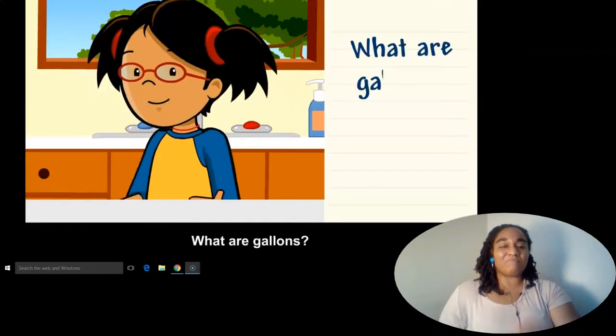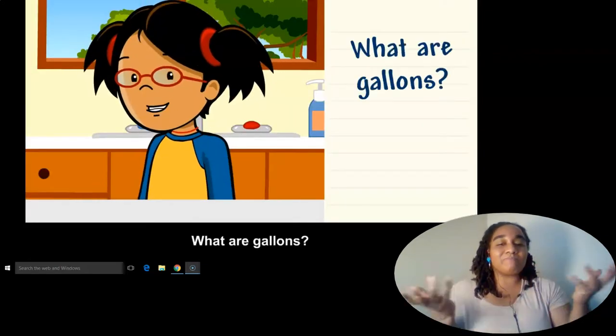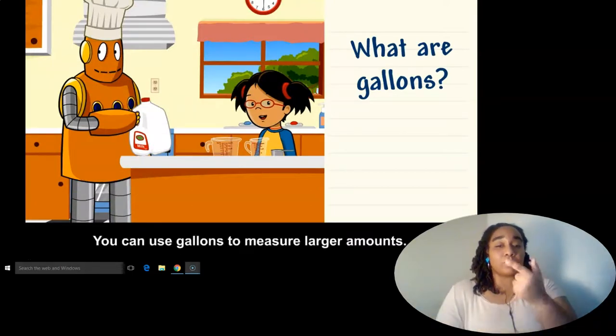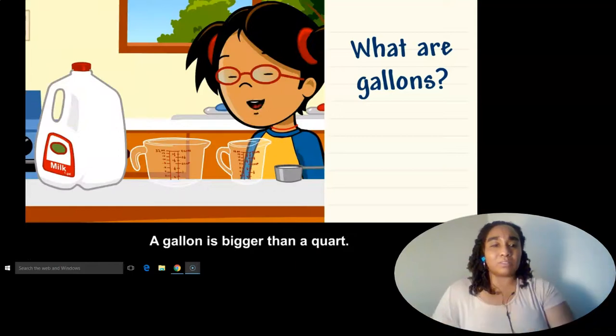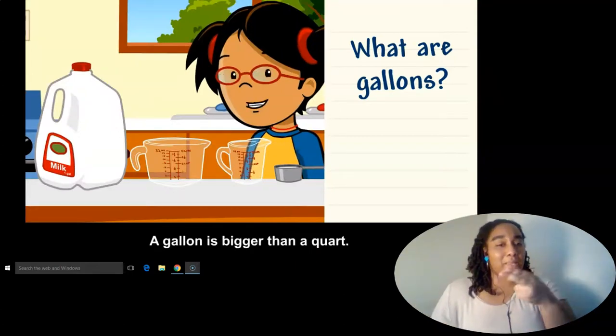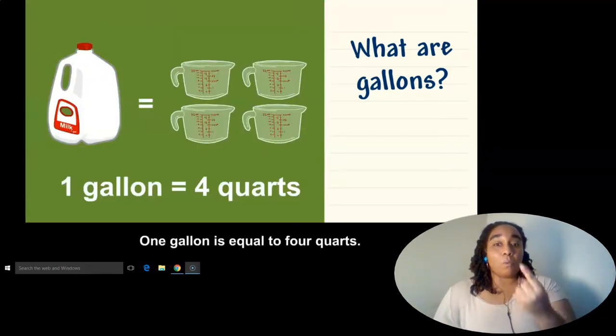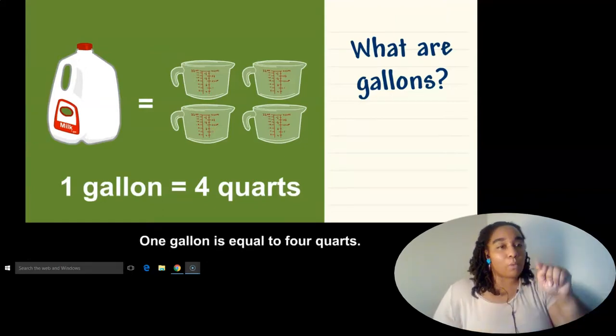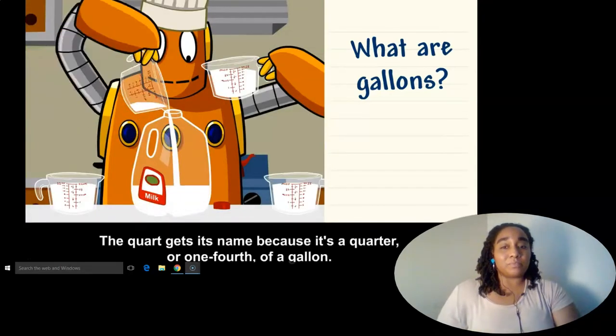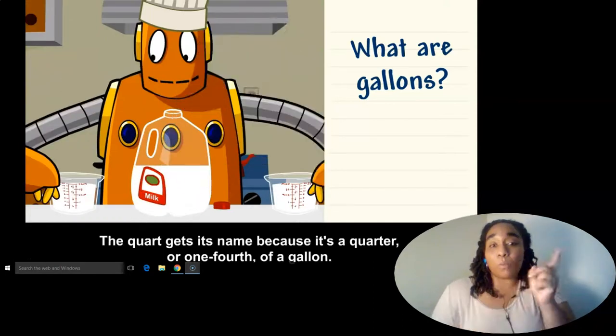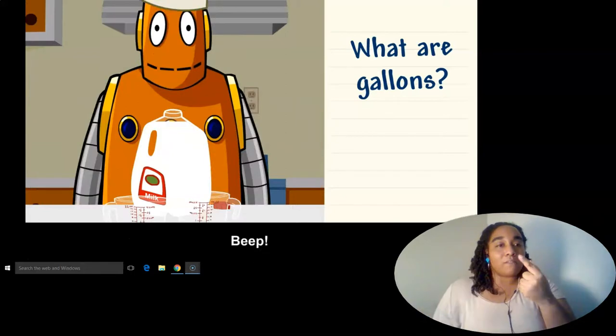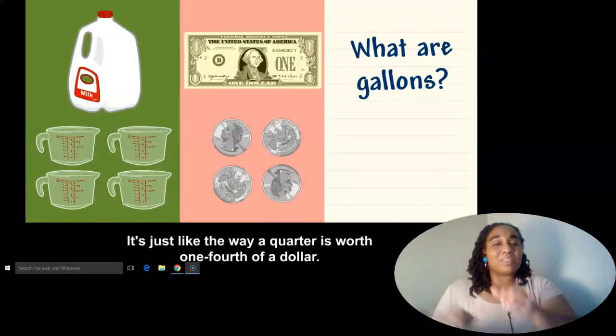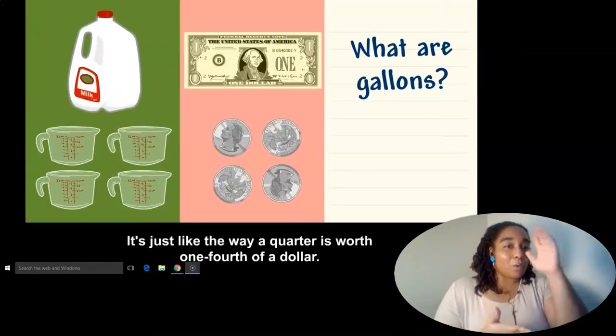What are gallons? You can use gallons to measure larger amounts. A gallon is bigger than a quart. One gallon is equal to four quarts. The quart gets its name because it's a quarter, or one-fourth, of a gallon. It's just like the way a quarter is worth one-fourth of a dollar.